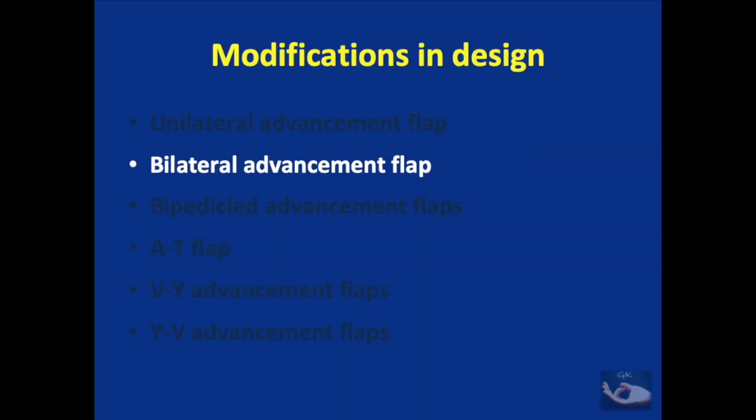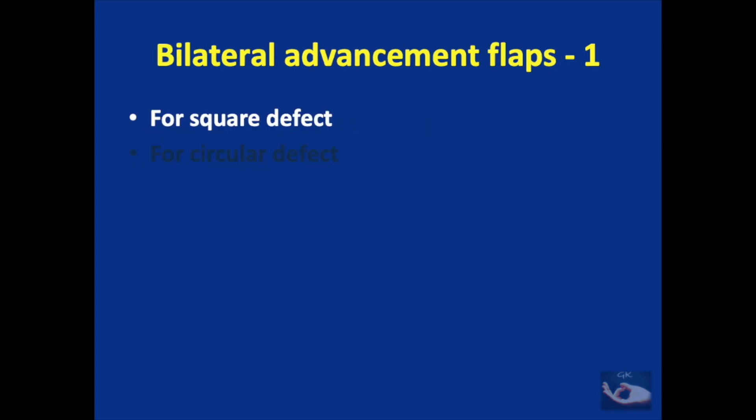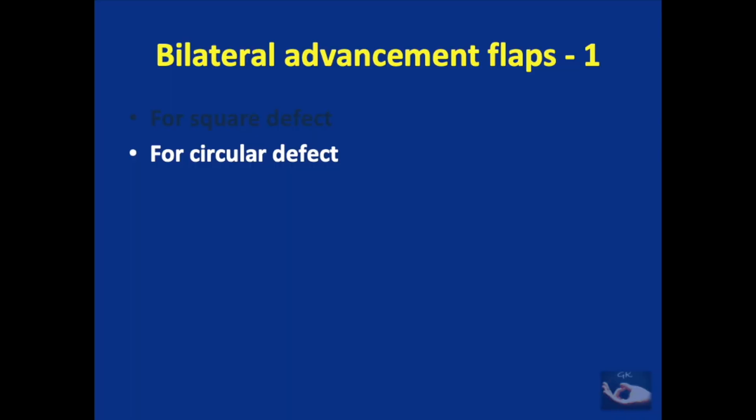This unilateral flap, when done from two directions, becomes the bilateral advancement flap. The design of the bilateral advancement flap can be for a square defect. Here, the defect is made square and is divided into two equal sized rectangles. Advancement flaps are planned for each of these two rectangular defects and advanced. The final suture line is like this.